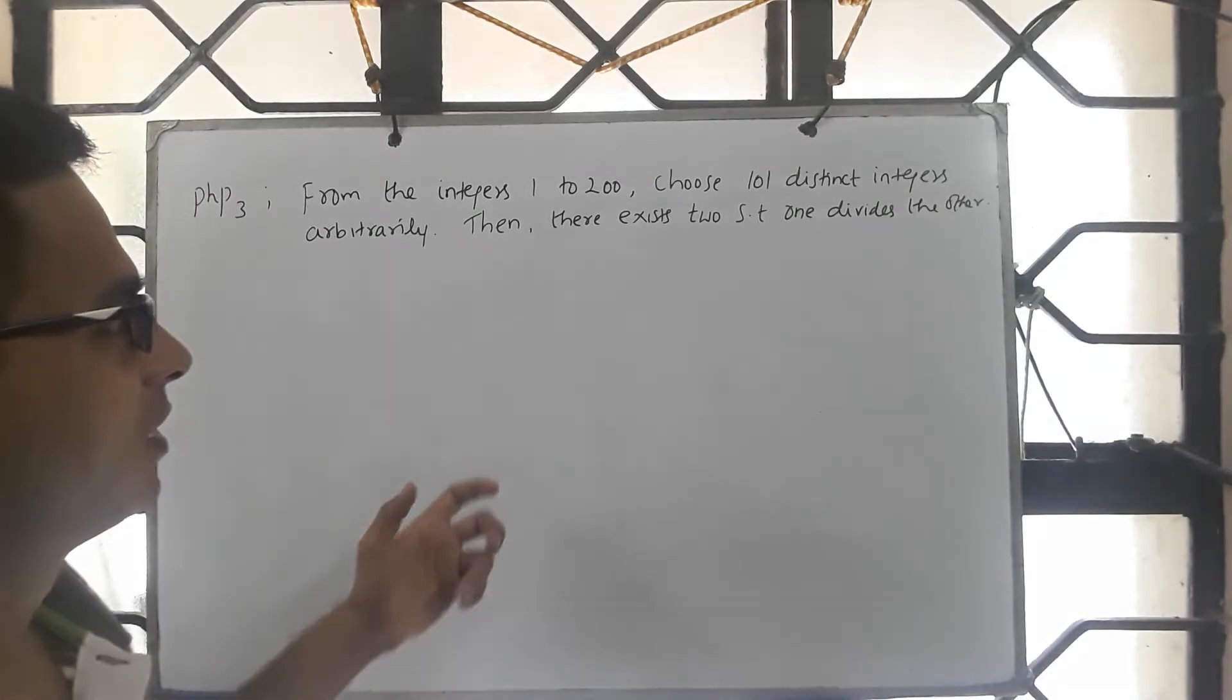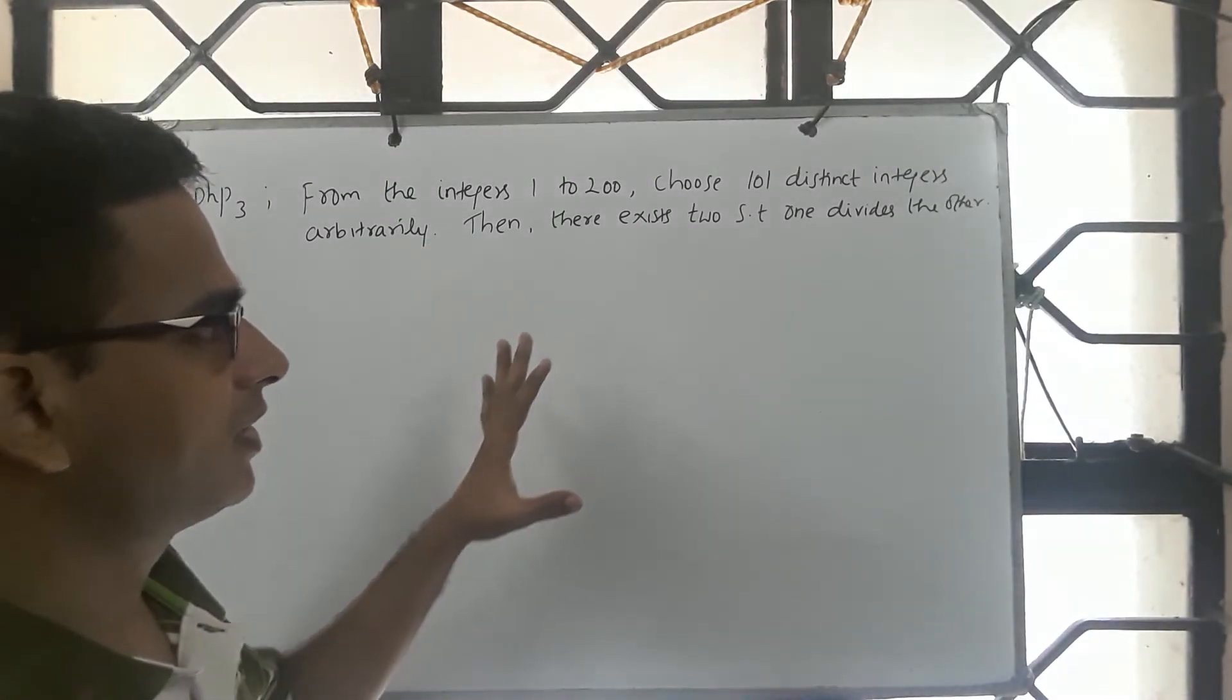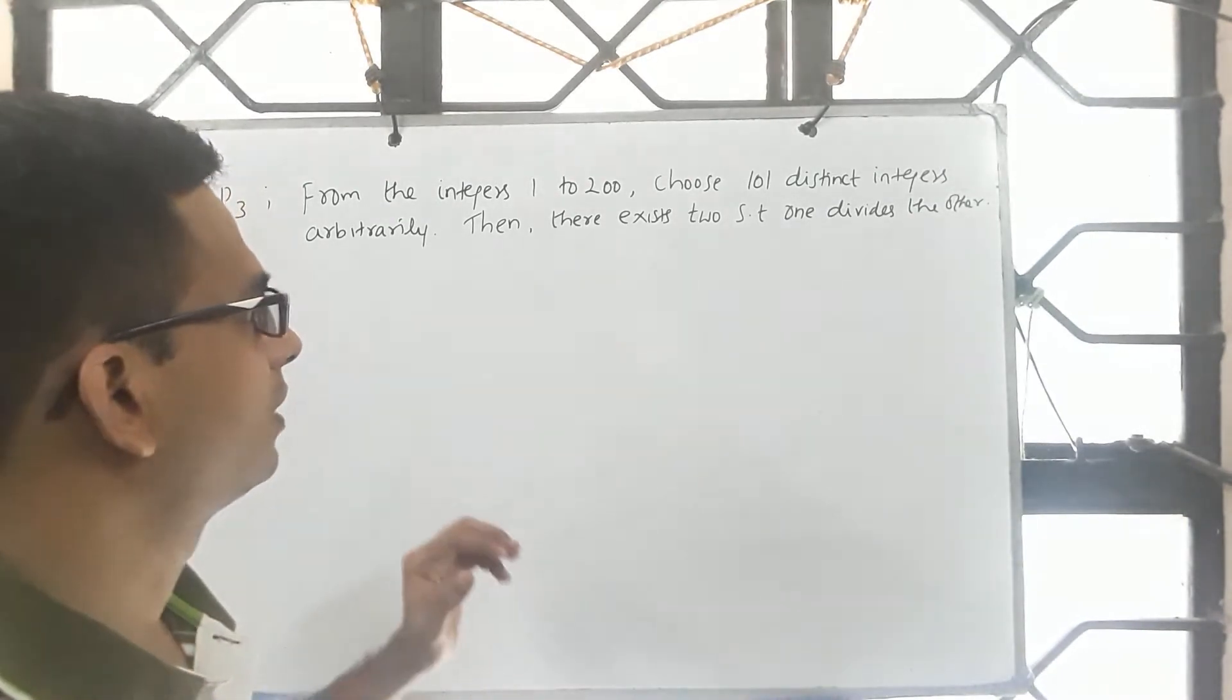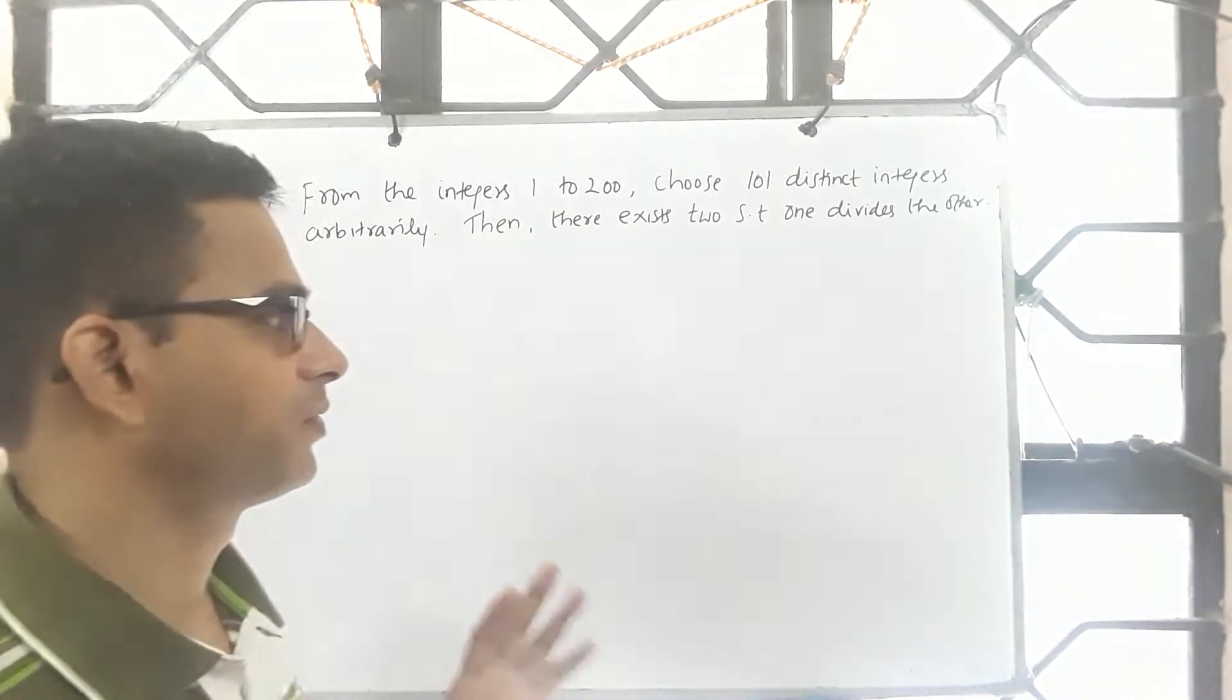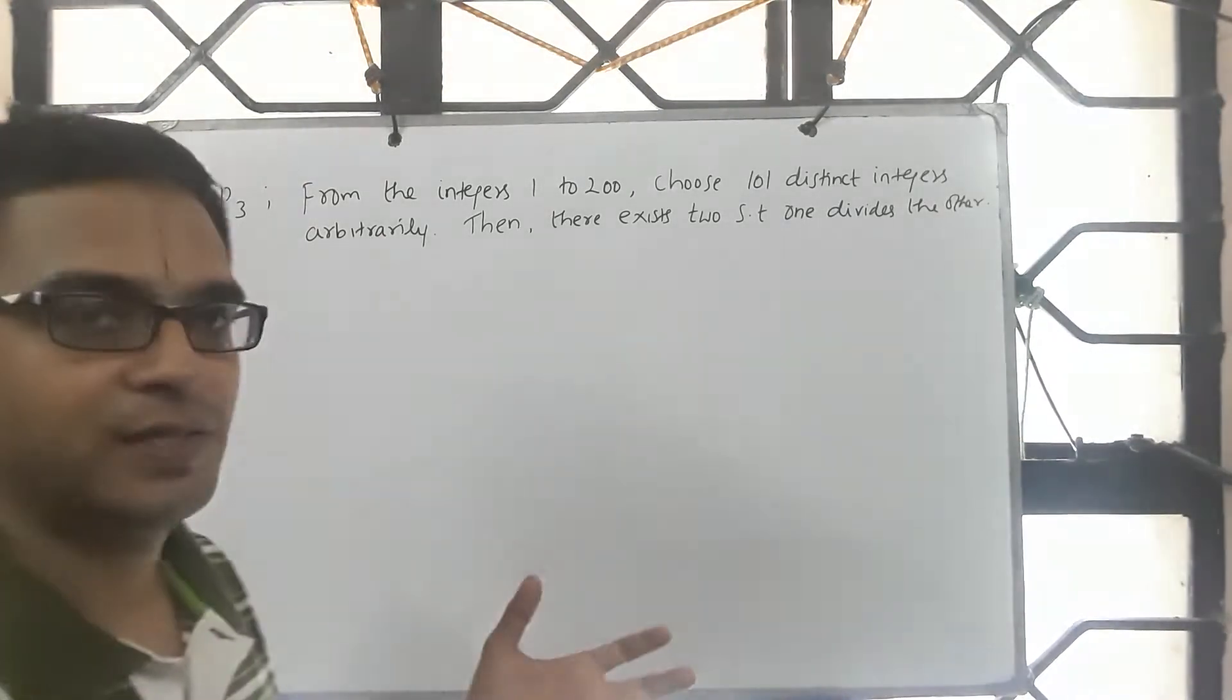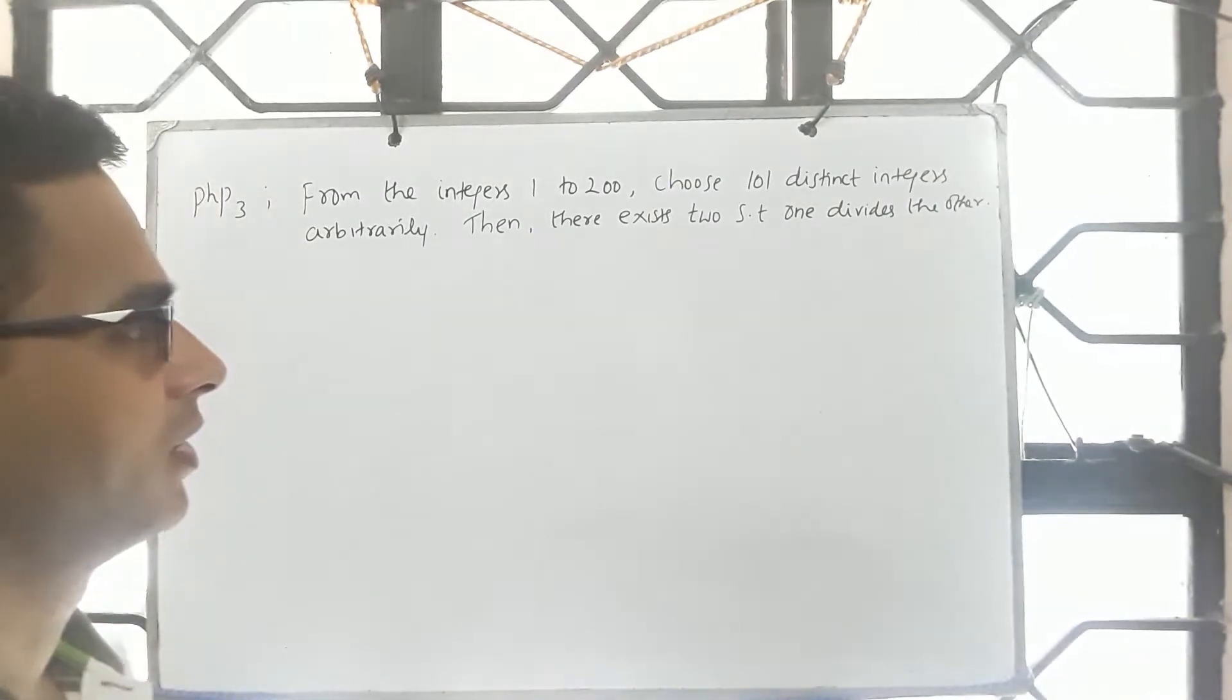As always, if we look at this problem, suppose we have decided that one can apply pigeonhole principle to solve it. One has to carefully parse the statement and identify pigeons and pigeonholes. That is the first task. Then when you see the difference is at least one, apply the appropriate principle and complete the proof.